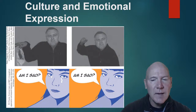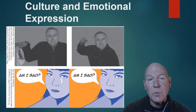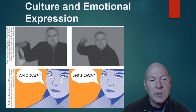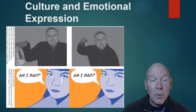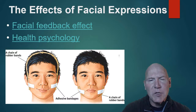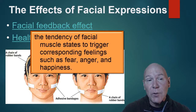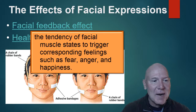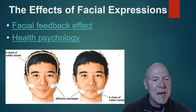When we add context like body language, the same expression can be interpreted differently. A man with the same facial expression appears to express disgust when holding something unpleasant, and anger in another context. Adding tears makes us perceive an expression as sadder. So our situations affect our emotional expressions. There's also what we call the facial feedback effect — our expressions can actually affect our emotions.